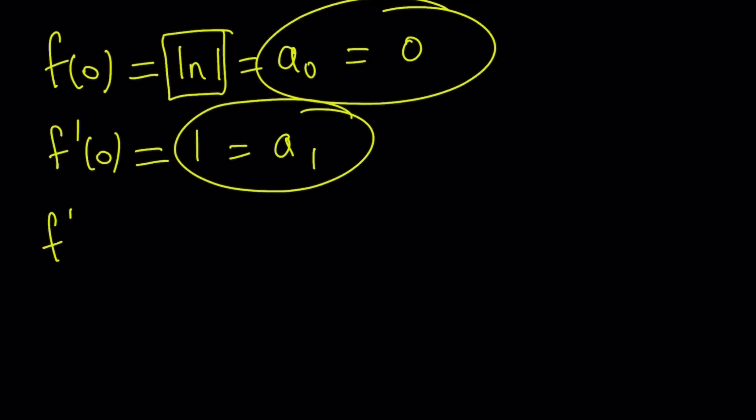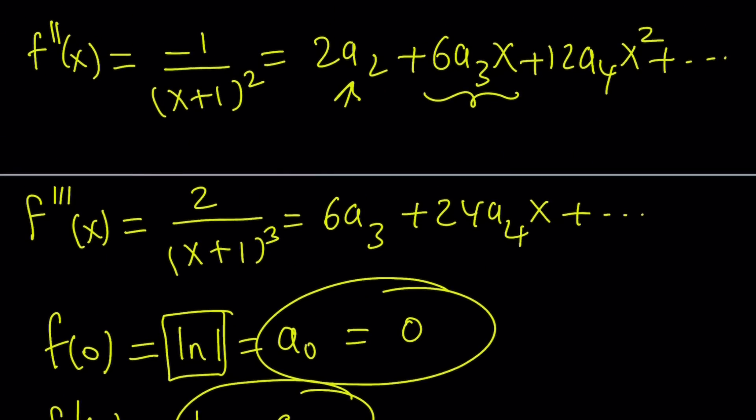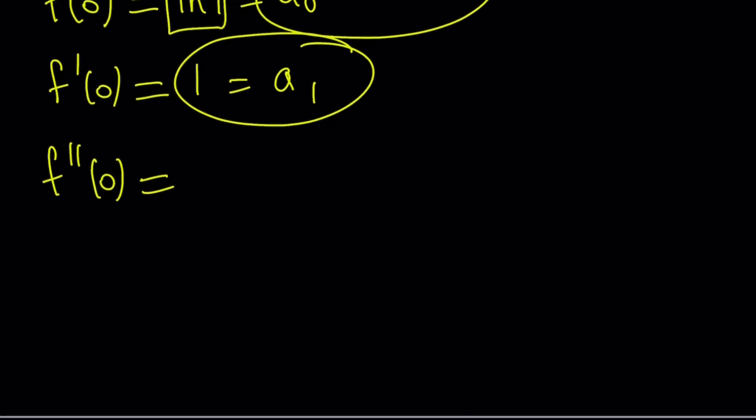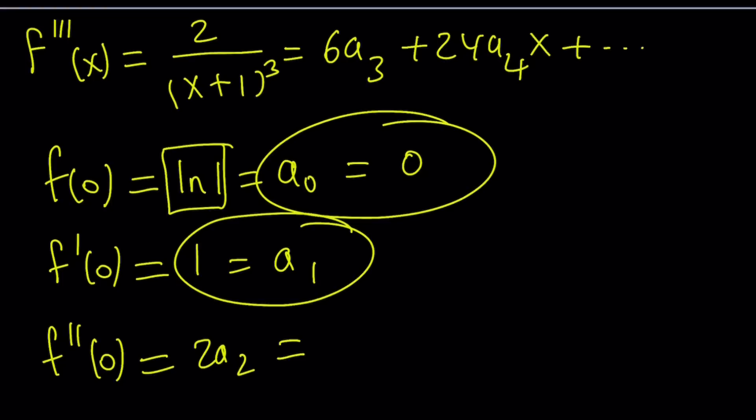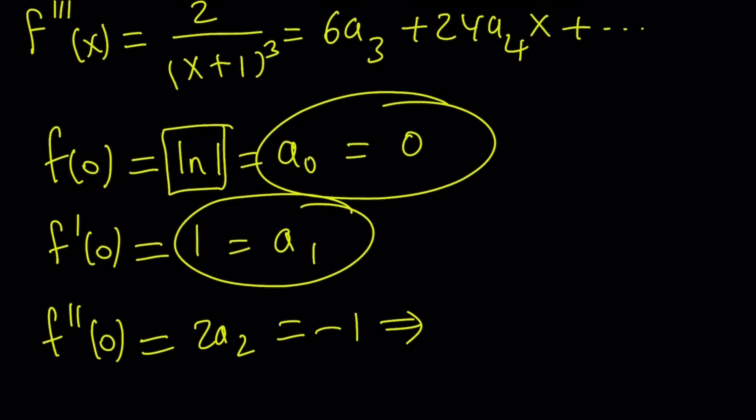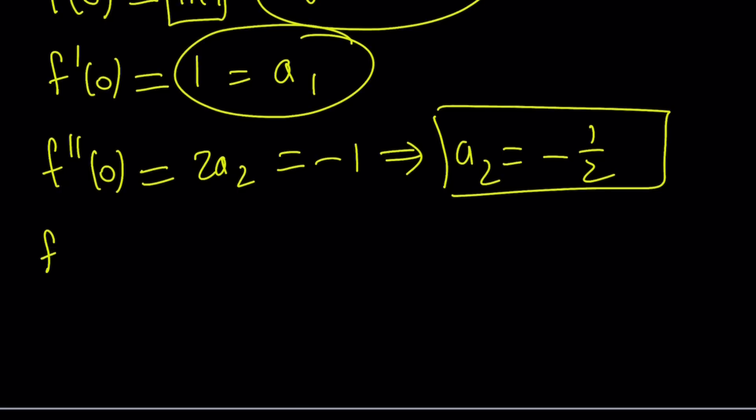That gives you a₁. And in the second derivative, replace x with 0 on both sides. You're going to get negative 1 from the left-hand side, and here you're going to get 2a₂. 2a₂ equals negative 1. So from here, a₂ is going to be negative 1 half.